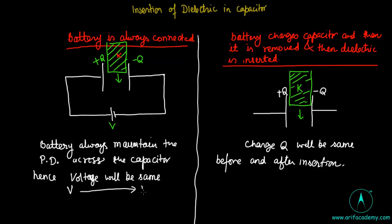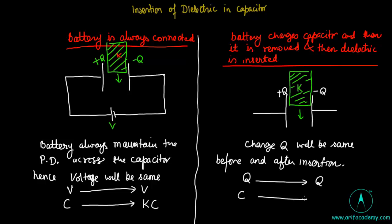The left side of the arrow shows the values before insertion of the dielectric, and the right side of the arrow shows what the new value of the physical quantity will be after reinsertion. Voltage is the same before and after insertion in the left case. In both cases, whether the battery is connected or not, the capacitance will become k times more — from epsilon-naught A by d to k epsilon-naught A by d.